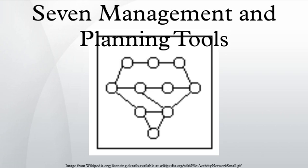The Tree Diagram is used to break down broad categories into finer and finer levels of detail. It can map levels of detail of tasks required to accomplish a goal, solution, or task. Developing a Tree Diagram directs concentration from generalities to specifics.